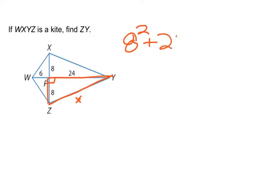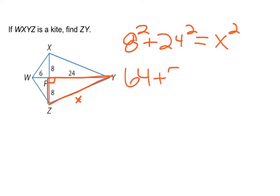The Pythagorean theorem is: leg² + leg² = hypotenuse². In this case, 64 + 576 = x².